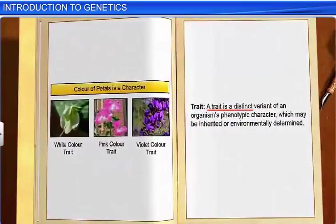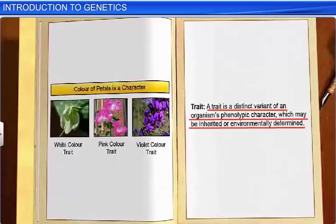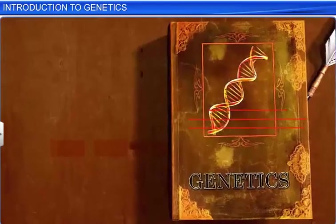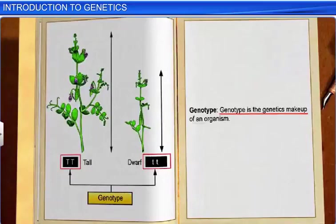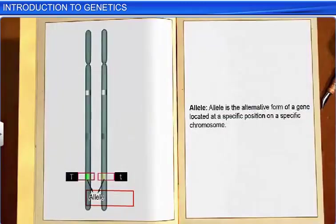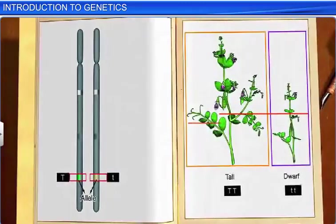A trait can be defined as a distinct variant of an organism's phenotypic character, which may be inherited or environmentally determined. For example, the color of petals is a character or an attribute, while the colors pink, violet, and white are traits. The genetic makeup of an organism is designated by the term genotype, while the appearance of the organism is designated by the term phenotype.